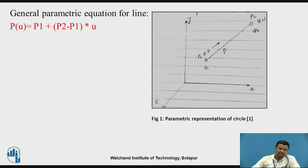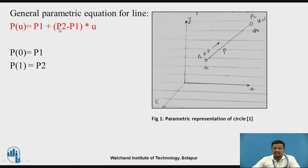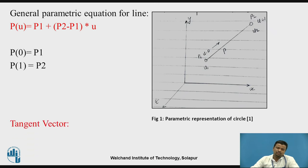These equations are written in parametric form. If we provide the limits or constraints — putting u = 0: p(0) = p1 + (p2 minus p1)·0 = p1. Similarly, putting u = 1: p1 and p2 minus p1 gives p(1) = p2. These are the limits and constraints for u = 0 and u = 1.